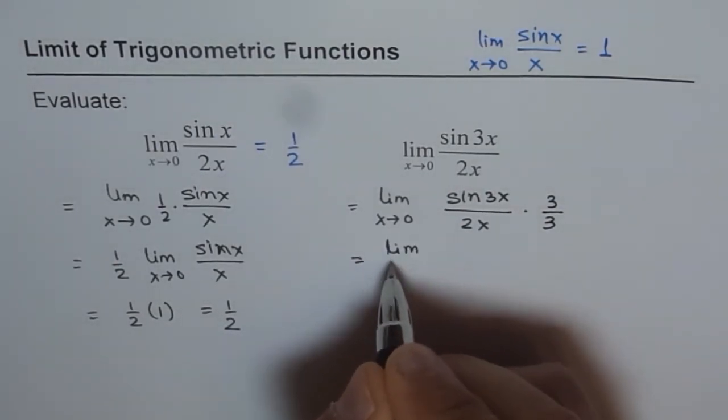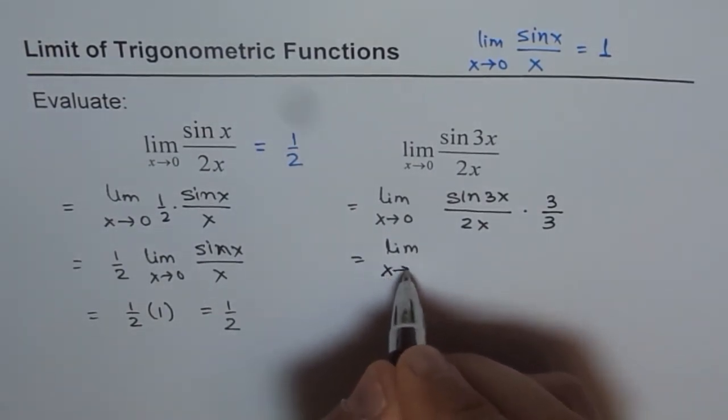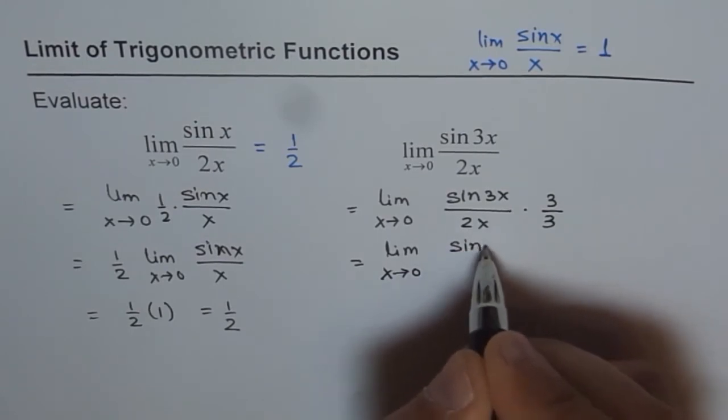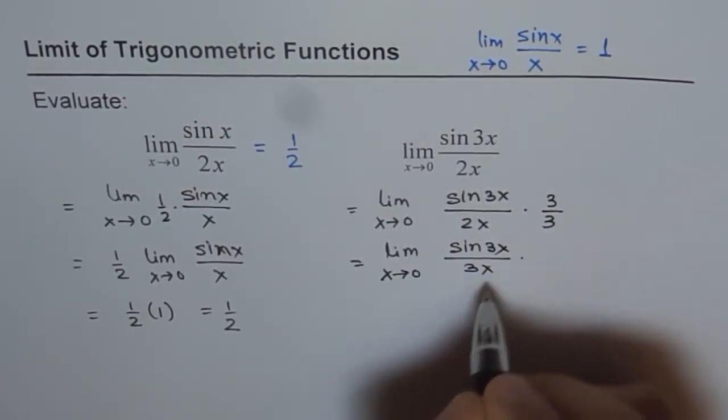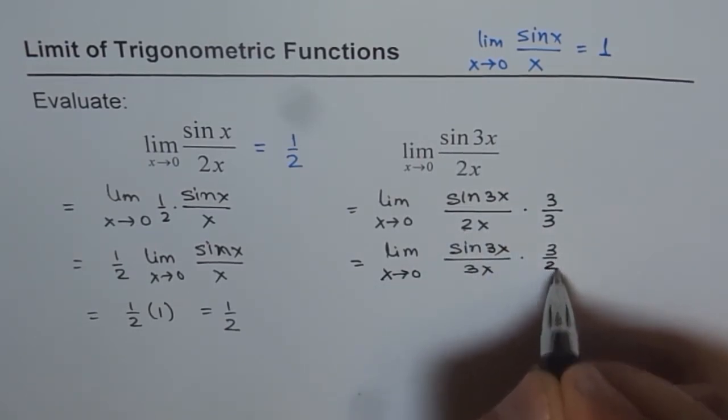So the idea is somehow to apply this fundamental limit and get the answer. That is the idea. So now we can rearrange. And what we get is sin 3x over 3x. So we swap 2 and 3 times 3 over 2.